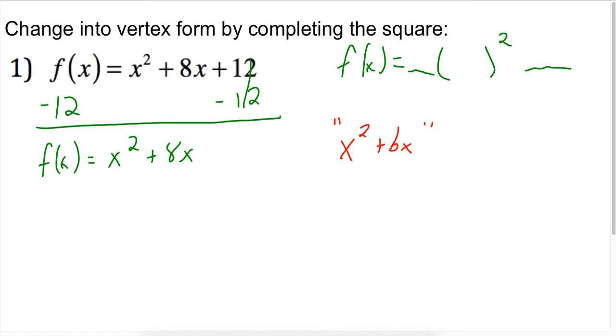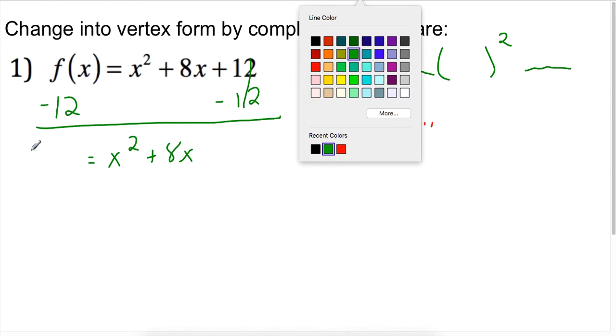And actually now I'm seeing I didn't quite move the whole thing over. So let me fix that. This should be f(x) minus 12. Let's fix that. f(x) minus 12.